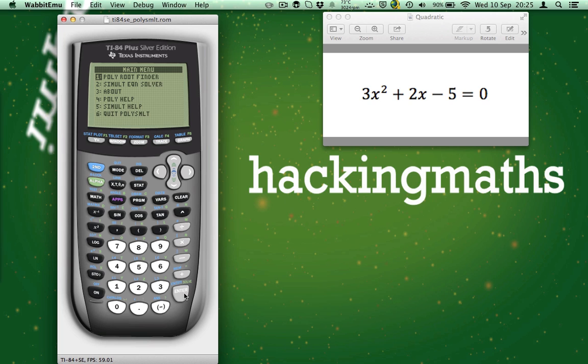The first option is the one we want. It should already be highlighted. So press Enter. We're going to solve the equation on the right. So let's have a look at it. 3x squared plus 2x minus 5 equals 0. We need to have our equation set up in this format. Otherwise it's not going to work.